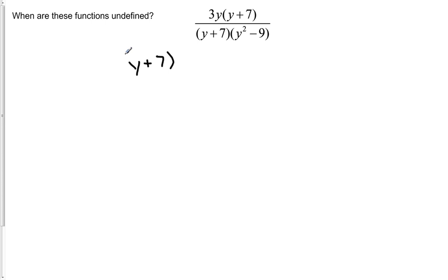We have, in this case, the denominator y plus 7 in parentheses times y squared minus 9. That's all equal to zero. Since, in order to make something equal to zero, we can set either factor equal to zero, since they're being multiplied together. Let's go ahead and do that.